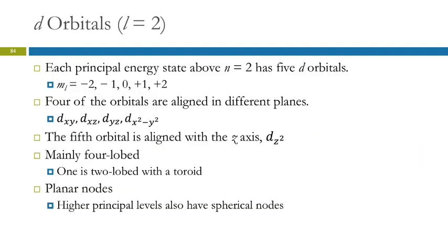Then there are the d orbitals. So that's l equals 2. When we have l equals 2, then we've got five possibilities for m sub l. So now we've got five different d orbitals.